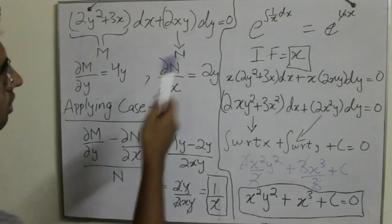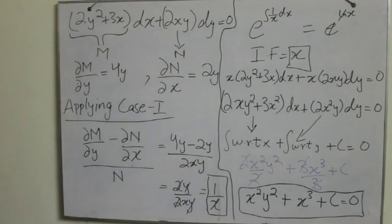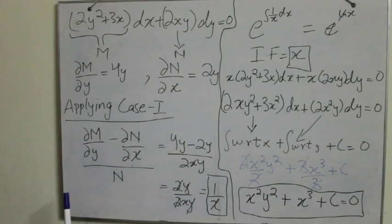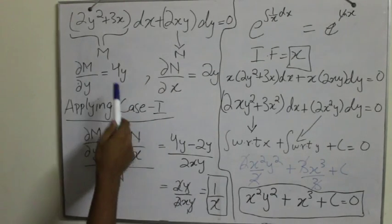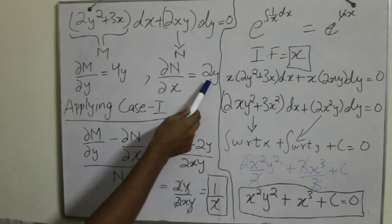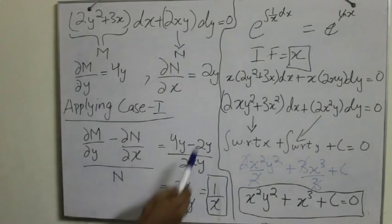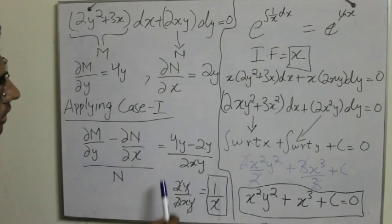So we go to reducible to exact method and apply case 1. So this is the case 1, the partial derivative of M with respect to y minus the partial derivative of N with respect to x upon N. So that we get 4y minus 2y upon N, 2xy. Upon simplifying it, I get 2y upon 2xy and then I further simplify it into 1 over x.